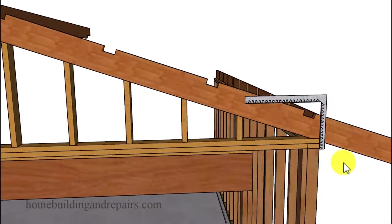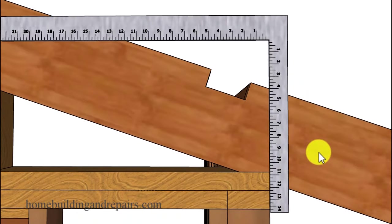And if we weren't going to have a rafter tail or the overhang and needed a plumb cut at the bottom, we could simply position the framing square again to lay out this line on our roof rafter.